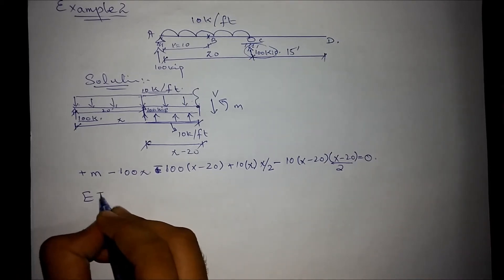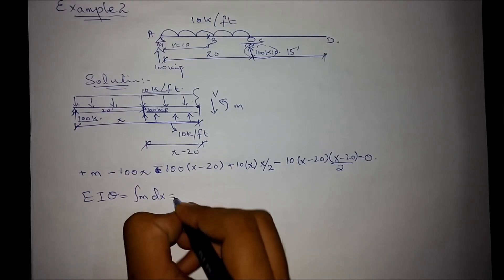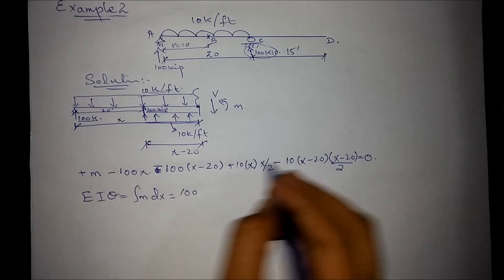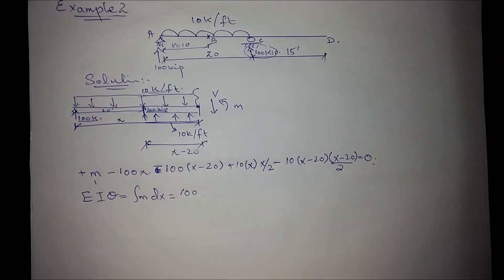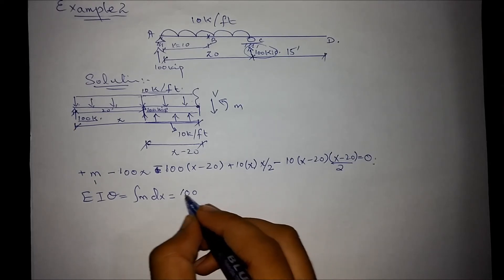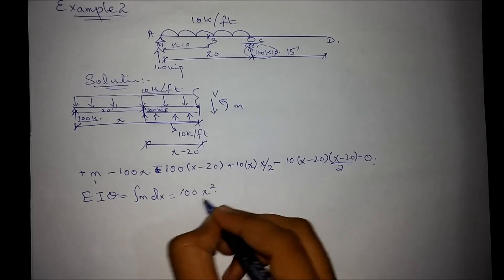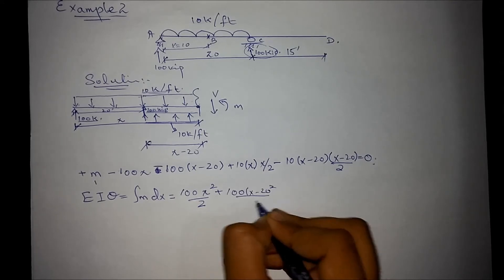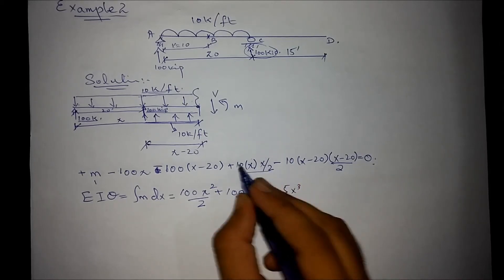So, we know that EI theta is equal to integral of moment which gives us minus 100x squared over 2 plus 100 times x minus 20 squared over 2 plus 5x cubed